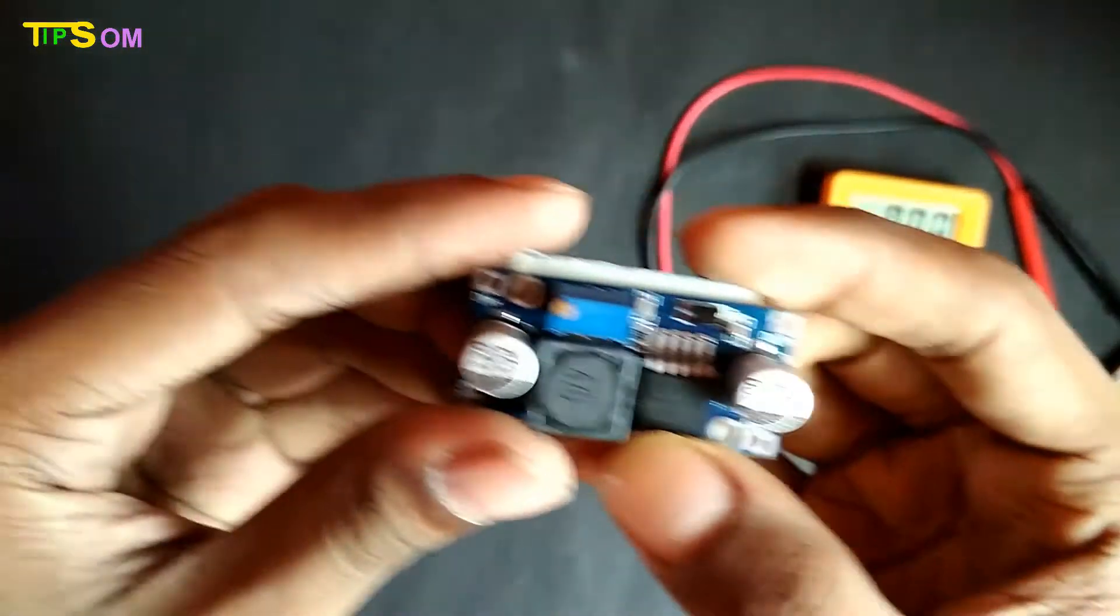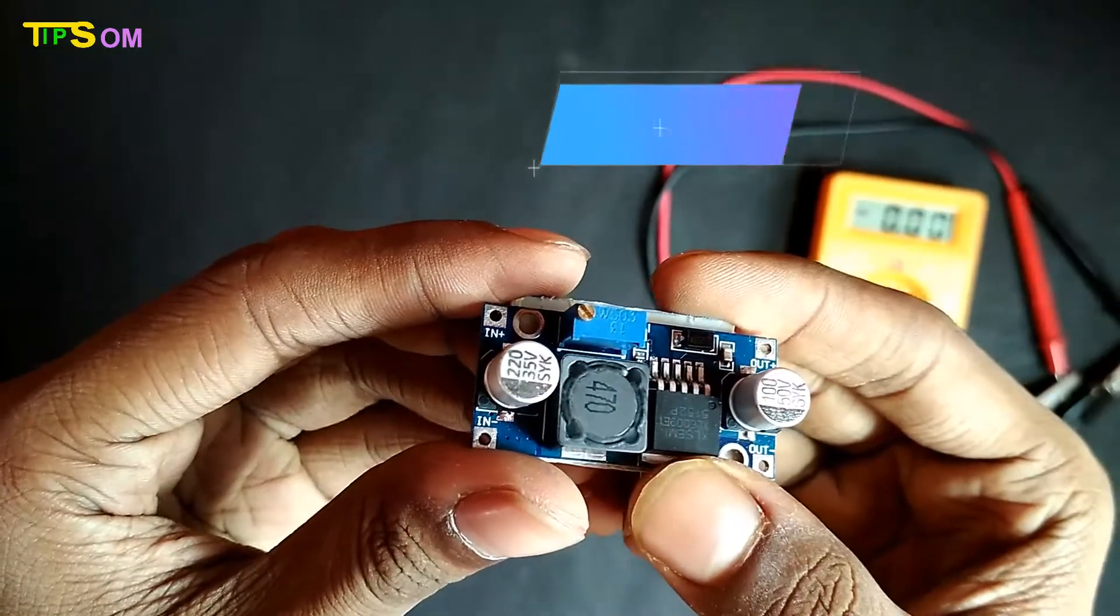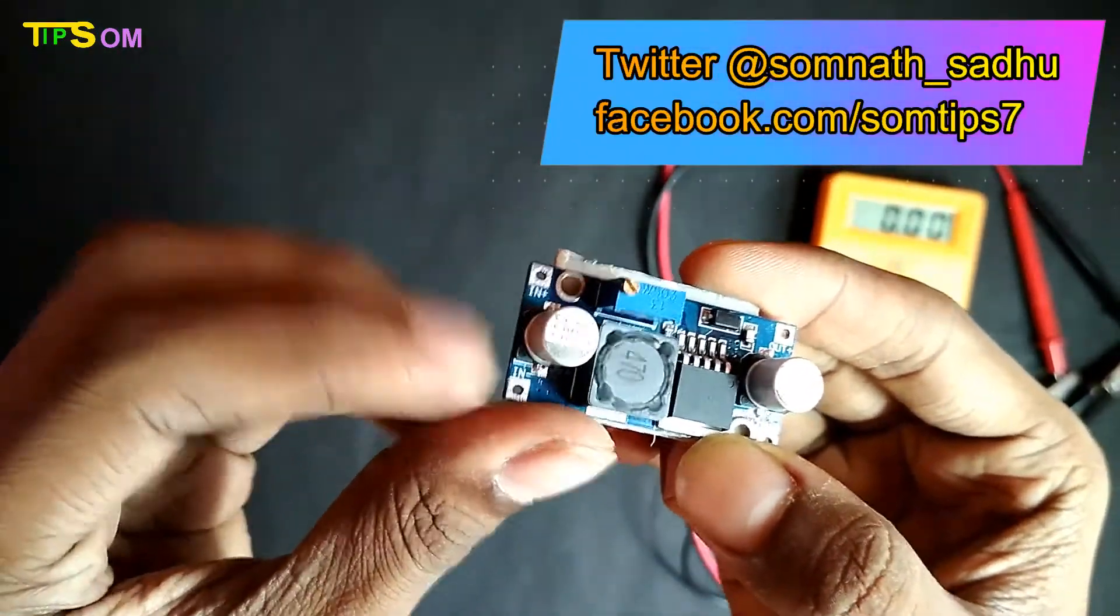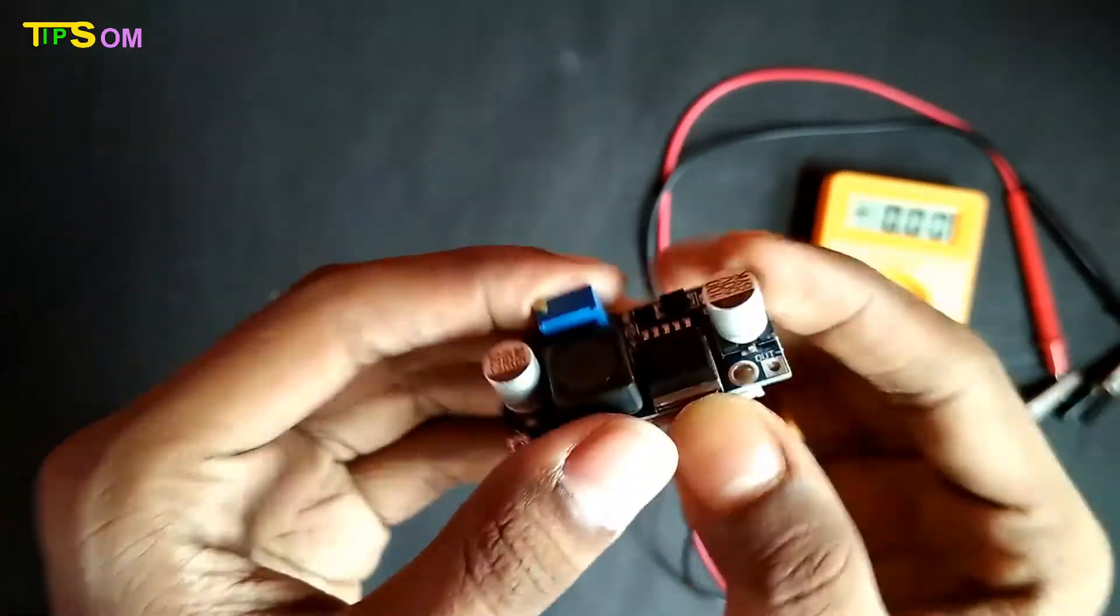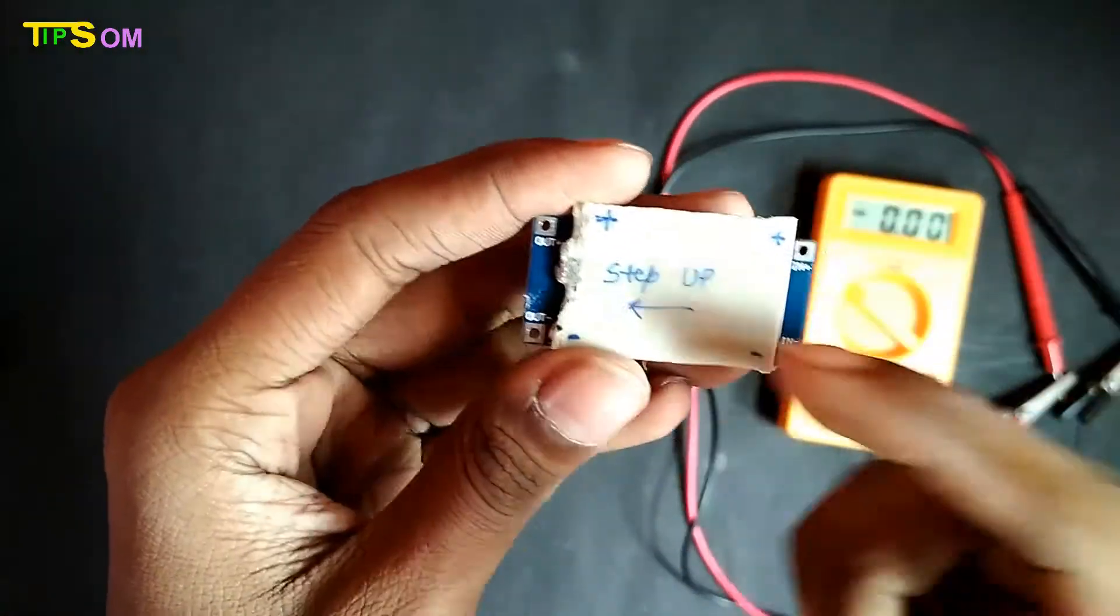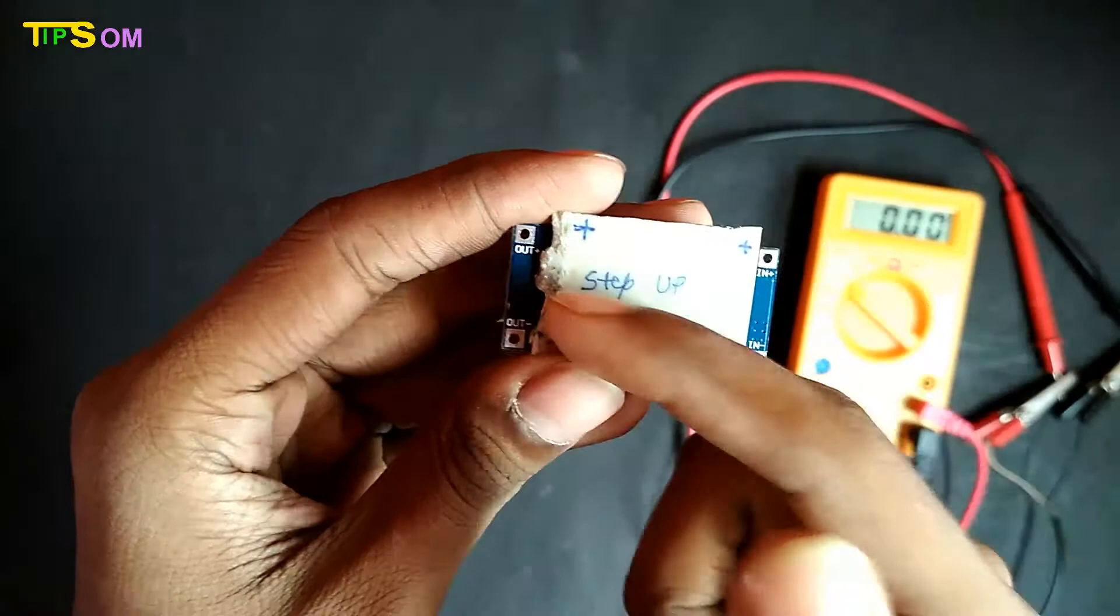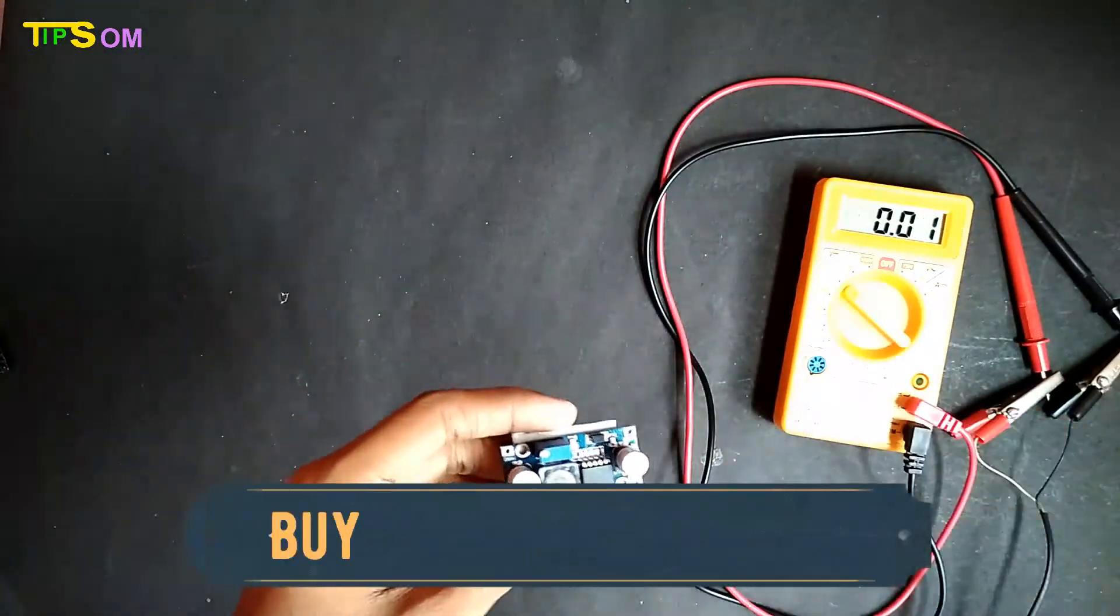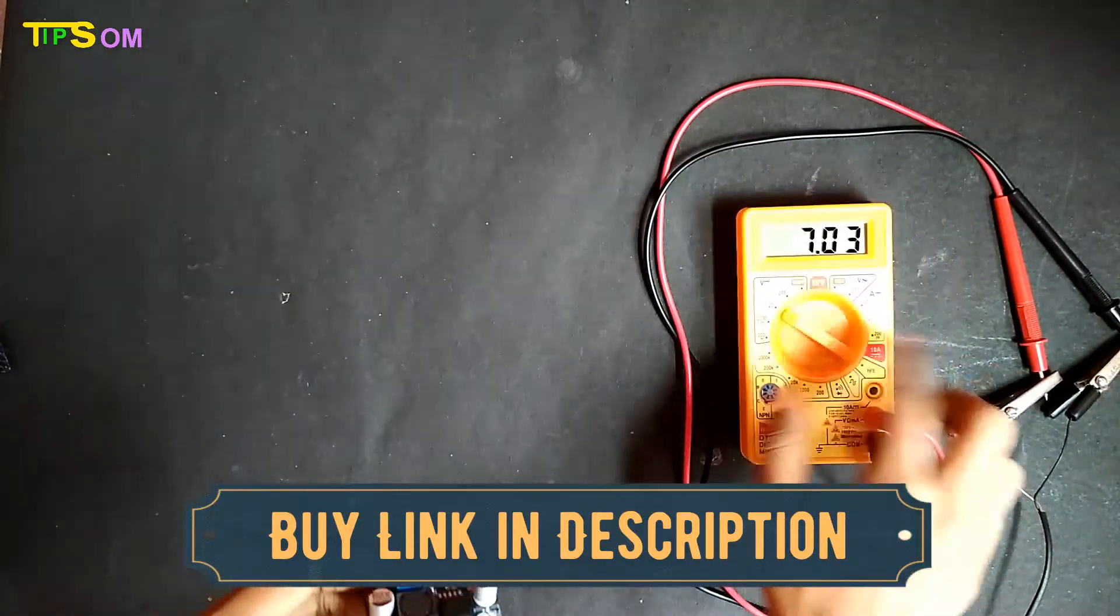So here is the DC Step Up Module and it is adjustable. There is a screw to adjust the voltage. The minimum voltage that can be applied on the input side is 3 volts, with plus and minus for input and plus and minus for output. The maximum you can give on the input side is 32 volts DC.